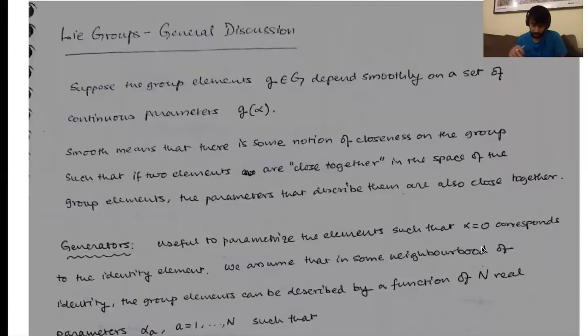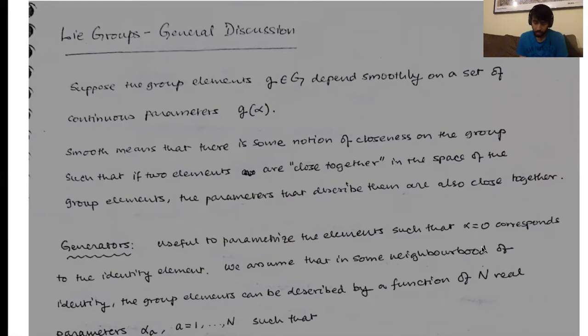Let's start. So these are some general discussions. What we are going to be doing is suppose that group elements of a group — a group element small g of a group big G — depends smoothly on a set of continuous parameters, and we'll call these things alpha. Smooth here means that there is some notion of closeness on the group such that if two elements are close together in the space of group elements, then the parameters that describe them would also be close together.